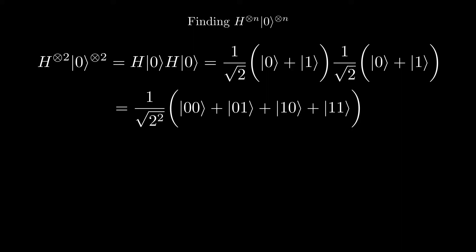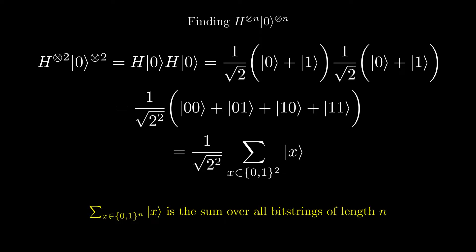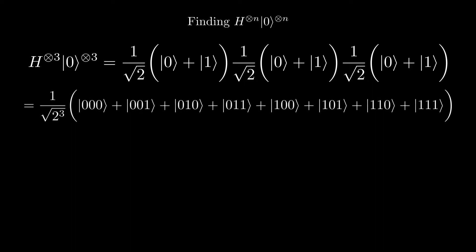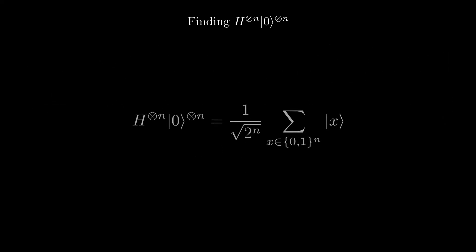We can represent the superposition states as a sum over all bit strings of length 2, x. For n equals 3, we have the plus state tensored with itself three times, and we can again represent the superposition states as the sum over all possible bit strings of length 3. Generalizing, if we apply a Hadamard to each of the n zeros, we get (1/√2)^n times the sum over all bit strings of length n, |x⟩. This is a very important identity used in many quantum algorithms — since each qubit is in the plus state, every possible combination of 0s and 1s occurs with equal probability.